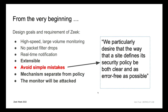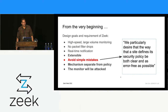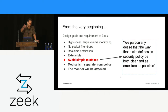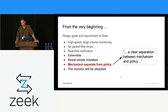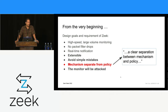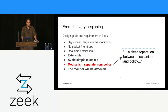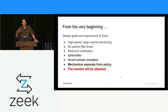Avoid simple mistakes means the site defines its security policy that should be clear and error free — each site has their own ways of doing things. Mechanisms separate from policy: Zeek is a network flight recorder — it records everything, doesn't tell you what's good or bad, it just records. Give me everything and let me figure out more heuristics. And monitor will be attacked means you can't really trust even the traffic you're monitoring.